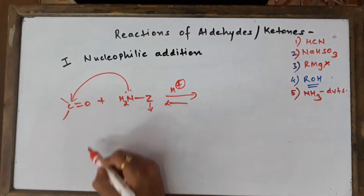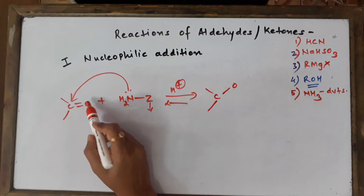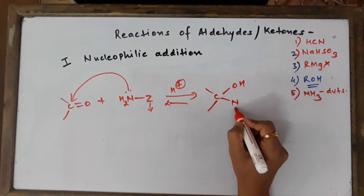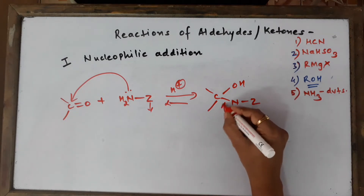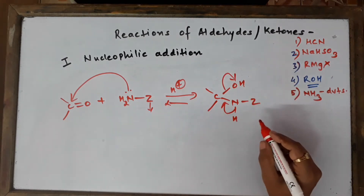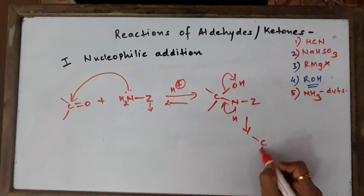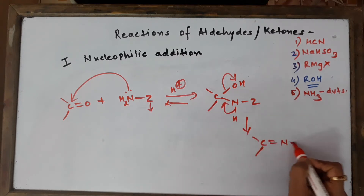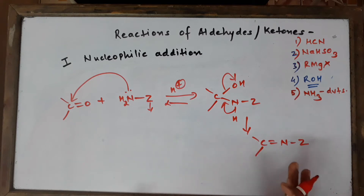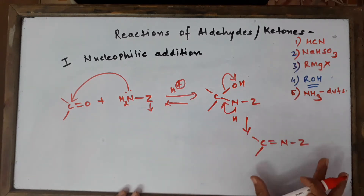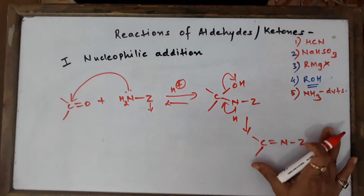In this reaction, C=O and H combine with NH2-Z to give an intermediate with C-OH and NHZ. This is the first step - the intermediate. In the second step, this compound releases water molecules, and we get a C=NZ double bond. Equilibrium favors product formation because of rapid dehydration of the intermediate to form this kind of compound. If you start with an aldehyde, you can write aldehydes over here.